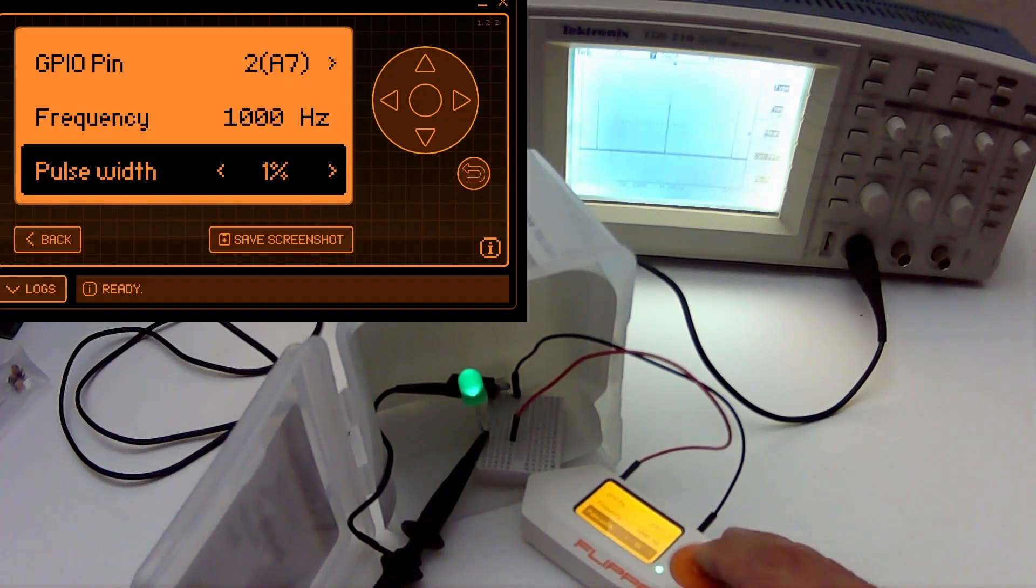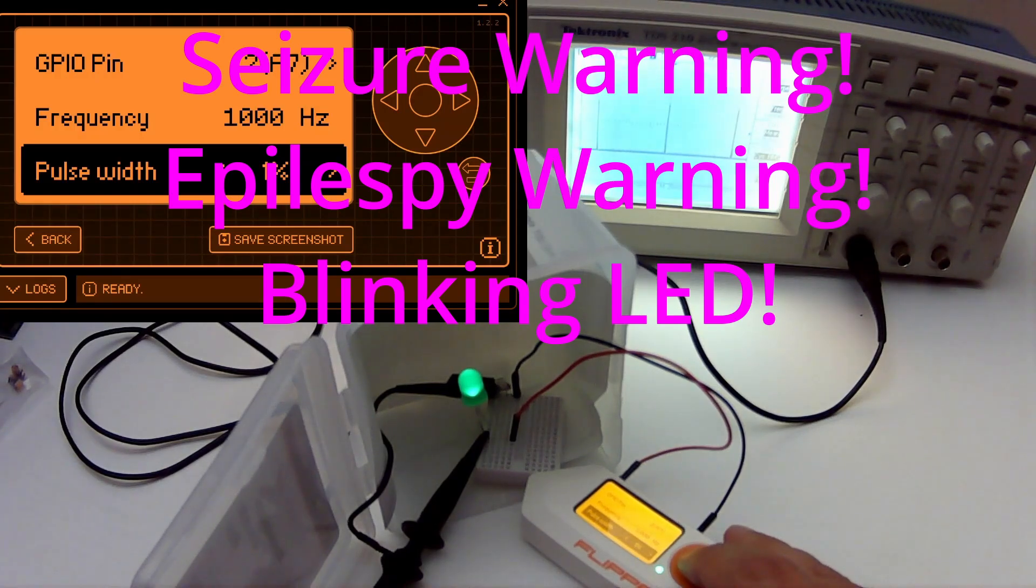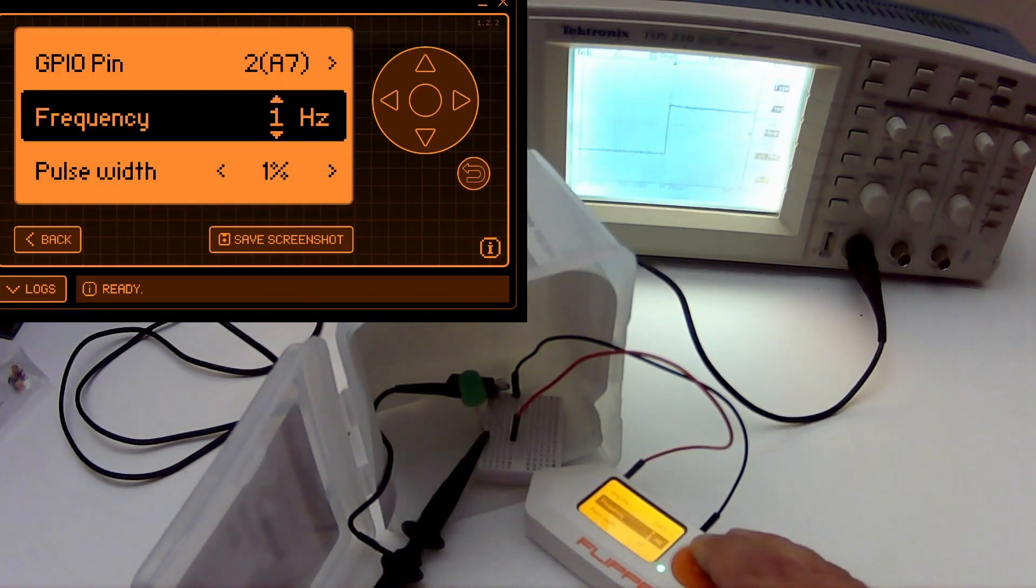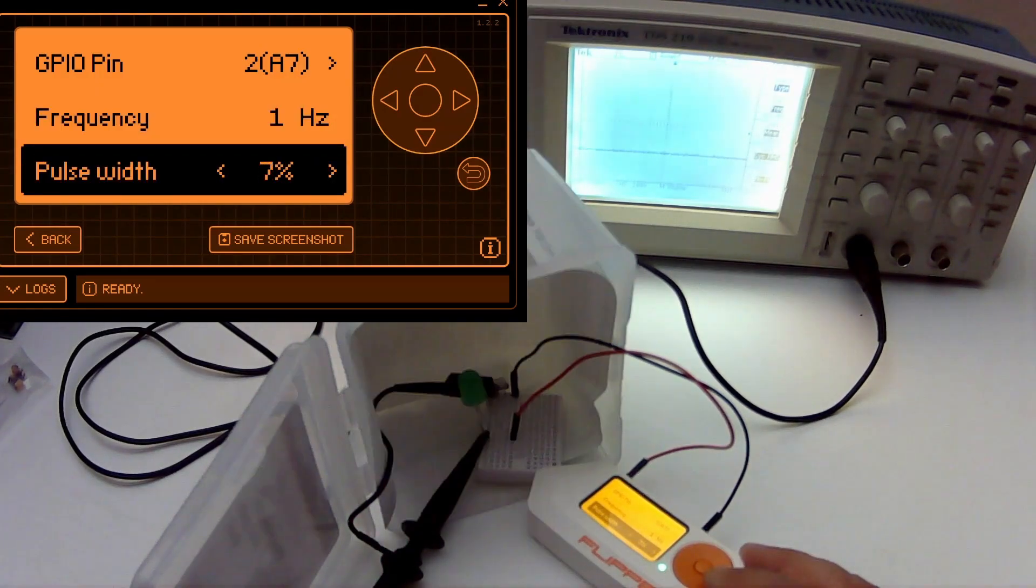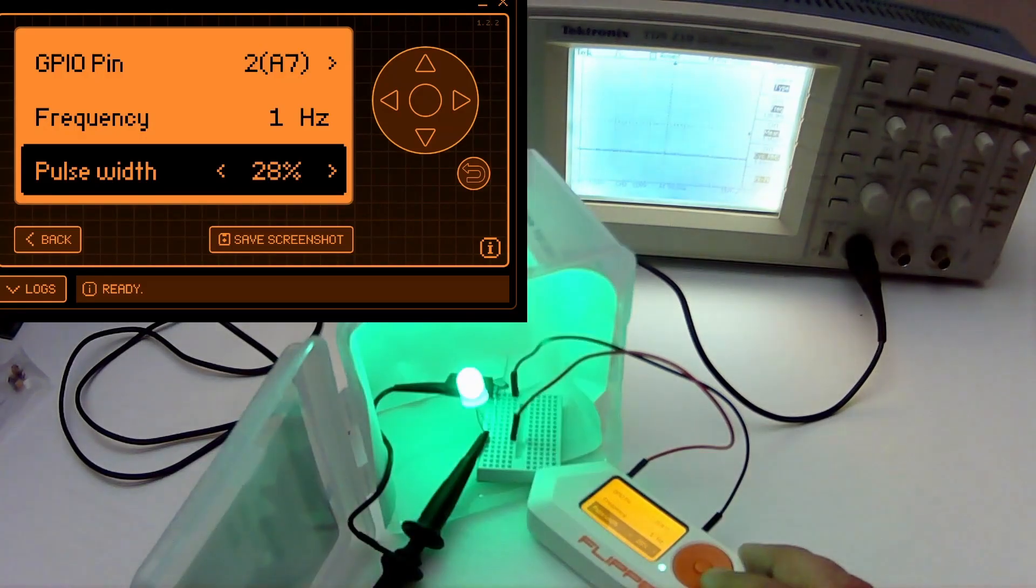So I'll turn the pulse back on to one percent. Warning, blinking LED. And then I'll change our frequency to once a second. So now I'm going to change our duty cycle back to 50% so that the light will be on and off in equal amount of time.